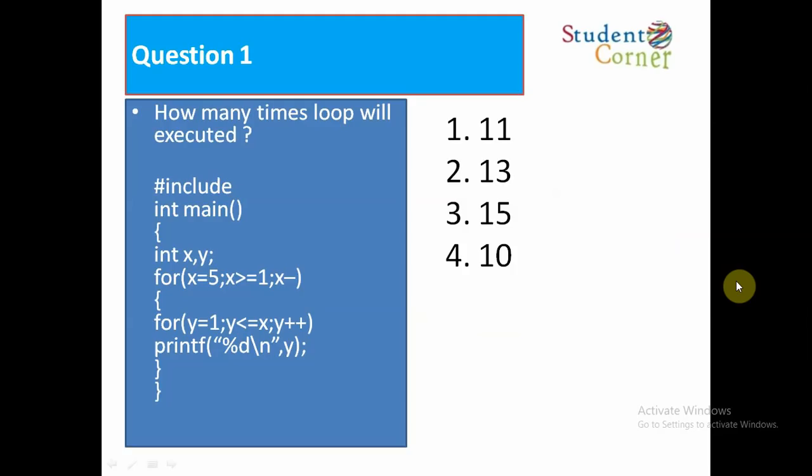Question one: How many times will the loop execute? Hash include, int main, int x comma y, for i equals 5, i greater than equal to 1, i minus minus, for y equals 1, y less than equal to x, y plus plus, print percentage in y. Y moves based on i, so first time five times, second time four times like it moves. So finally it moves 15 times, means 5 plus 4 plus 3 plus 2 plus 1, it will give 15 times.